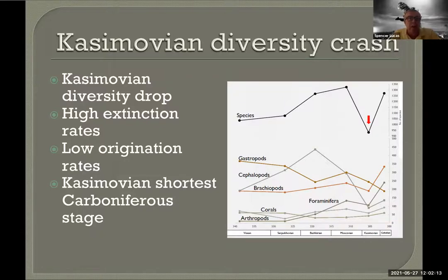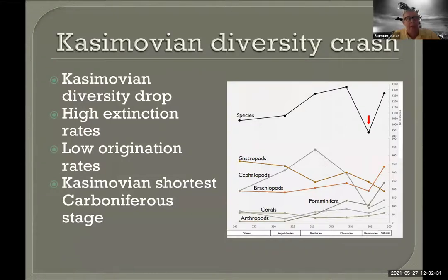One interesting thing I should say is that I think we can move beyond the Stanley and Powell concept of sluggish evolution of the Carboniferous. Certainly the Chinese dataset doesn't show depressed diversity and low origination and extinction rates throughout the Carboniferous. I think Stanley and Powell's analysis is mostly an artifact of the database they used — Steve Stanley has his own database that he published in a long article in Paleobiology some years ago.